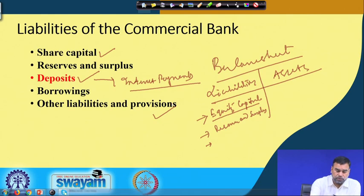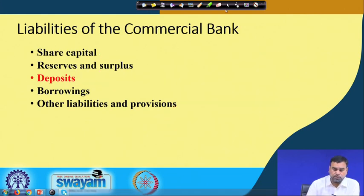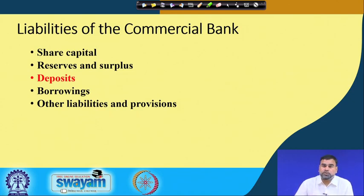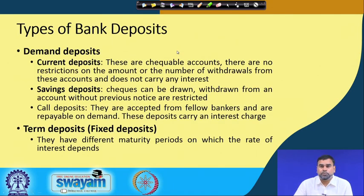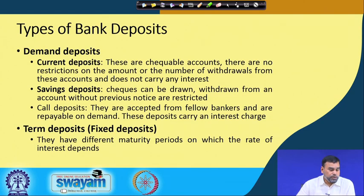The major type of liability the commercial bank has is deposits. We need to understand more about deposits — what the different types of deposits are and what factors determine the deposit base of commercial banks. Whenever you talk about bank deposits, the maximum component of total liabilities comes from the deposit base. Broadly there are two types of deposits: demand deposits and term deposits or time deposits.